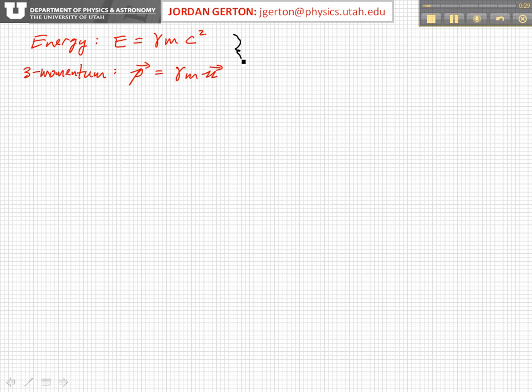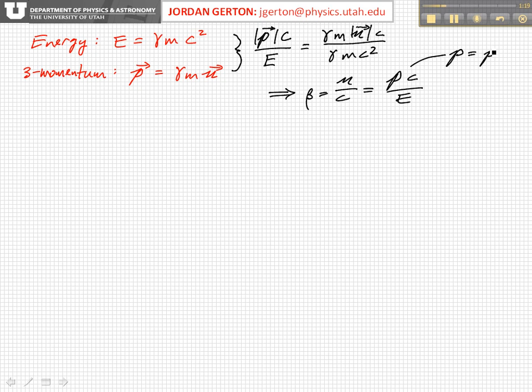Now, if we look at these two expressions, and we multiply p times c and divide it by the energy, then that's gamma m absolute value of u times c divided by gamma mc squared. What we find is that beta is equal to u over c is equal to p c over e, where p is just the magnitude of the three momentum.